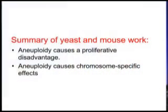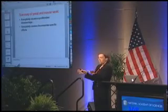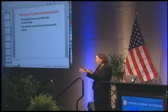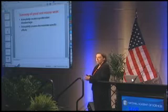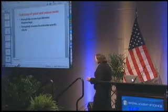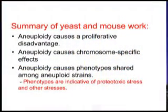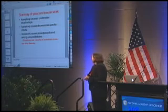The second thing we learned is that these cells have characteristics — phenotypes — and they are chromosome-specific. Each chromosome has a unique set of genes, and some of these genes, when present in the wrong copy number, affect the cell in some way, causing a particular trait. But what was perhaps most interesting was that in addition to these chromosome-specific effects, many of our aneuploid cells actually shared a number of phenotypes indicative of proteotoxic stress and other stresses.